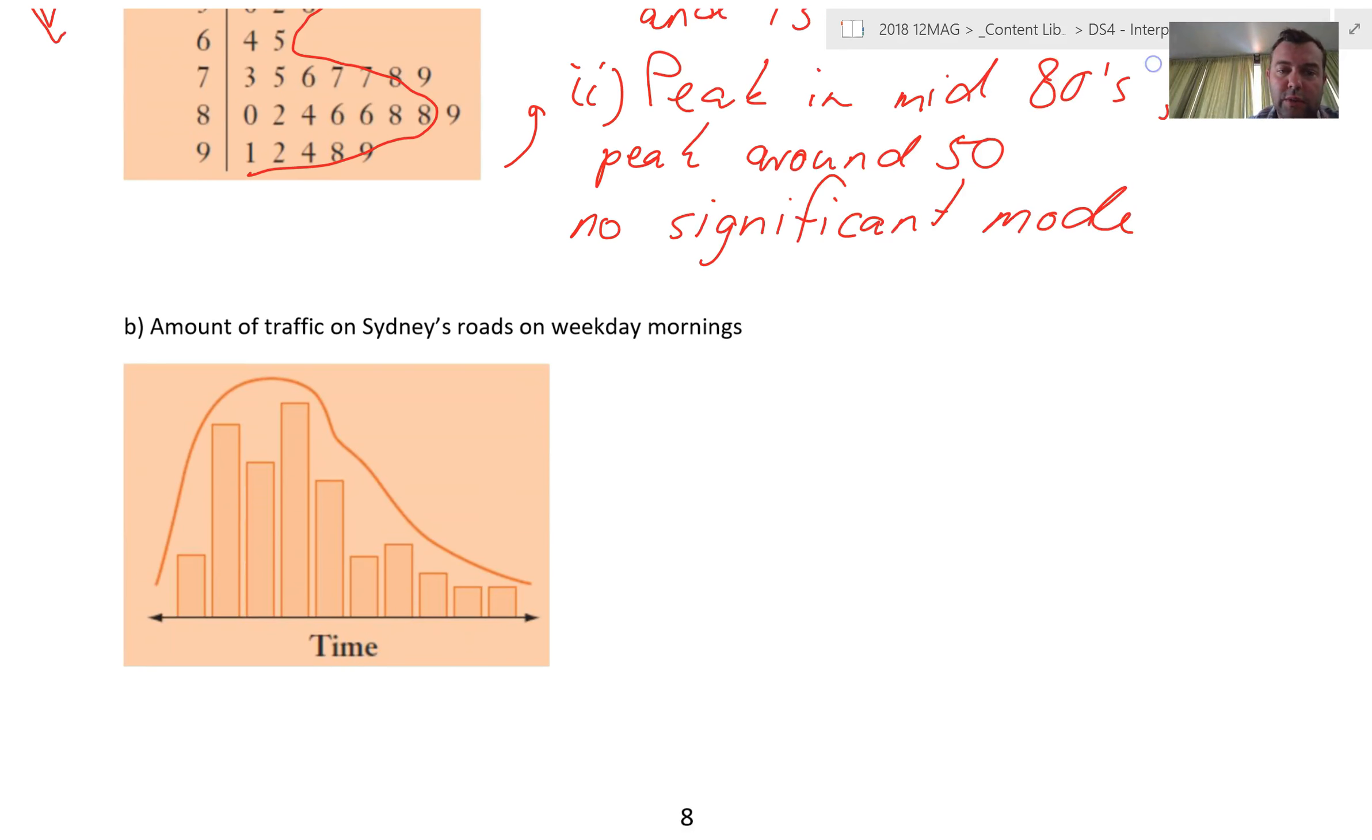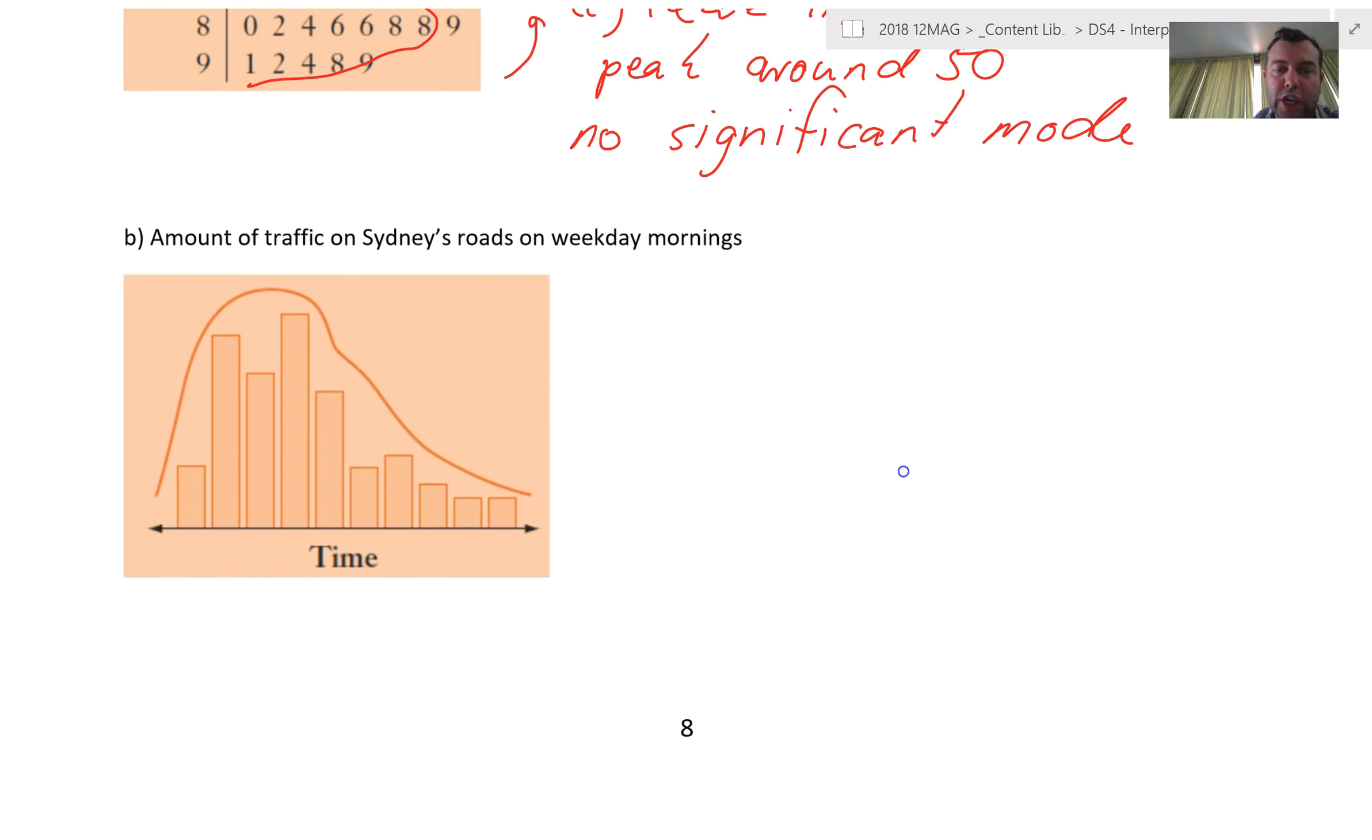Let's try that again with a different set of data. So, shape of this - I do have a bit of a peak here, and sort of a bit more happening over on this positive side of it, so I'm going to call that positively skewed.